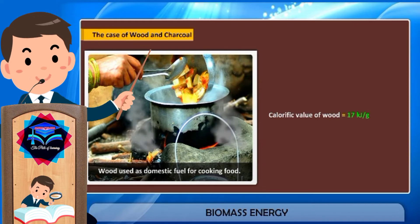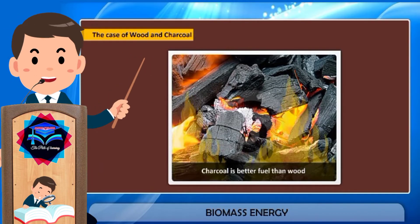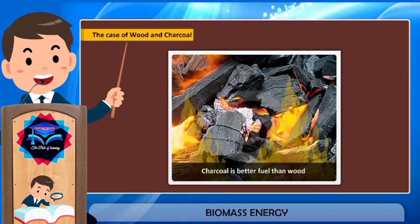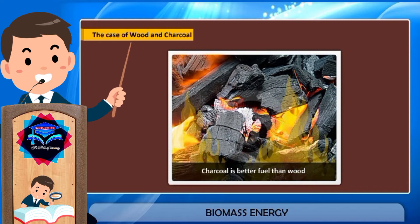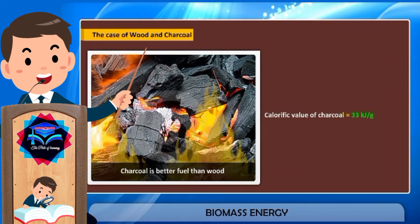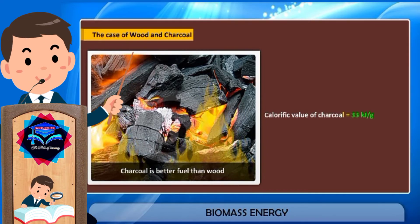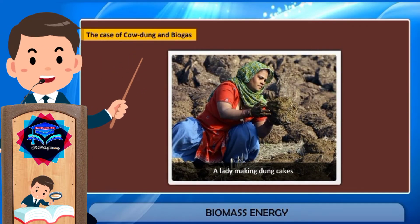With improvement in technology for using conventional sources of energy, wood can be converted into a much better fuel called charcoal. Charcoal is a black substance prepared by burning wood in a limited supply of air to remove water and other volatile substances present in the wood. Charcoal does not produce smoke while burning and has a higher calorific value than wood, which is 33 kilojoules per gram.